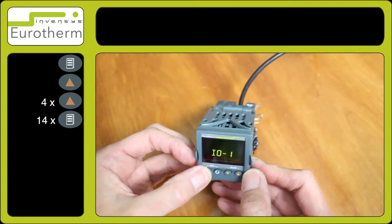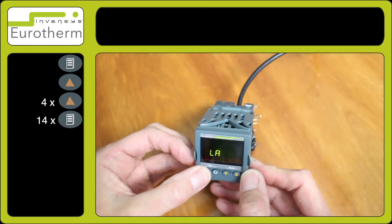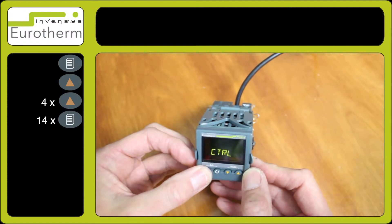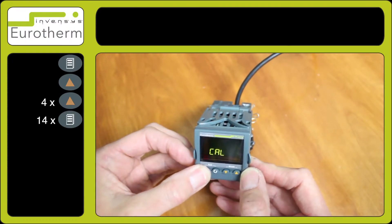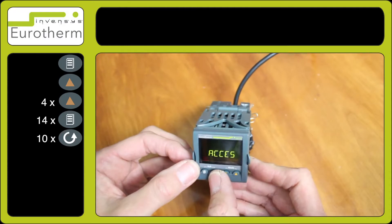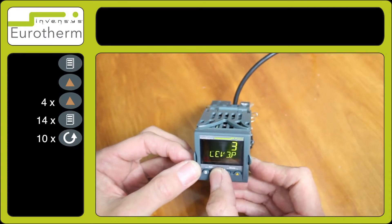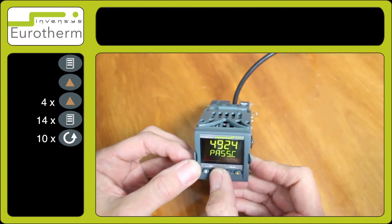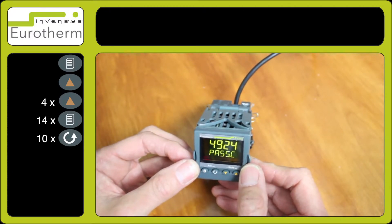Press the page key several times until access appears. Press the scroll key a few times until you see pass.c.